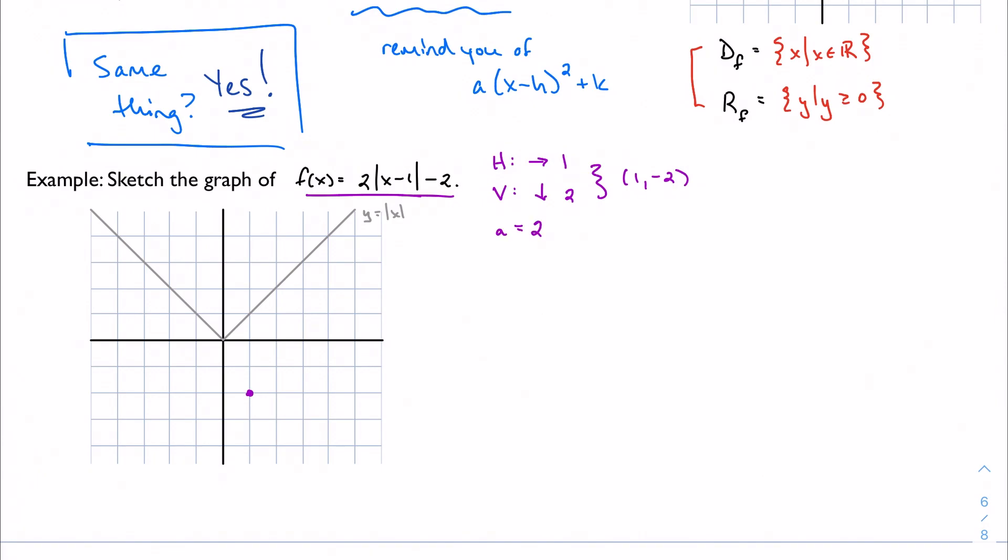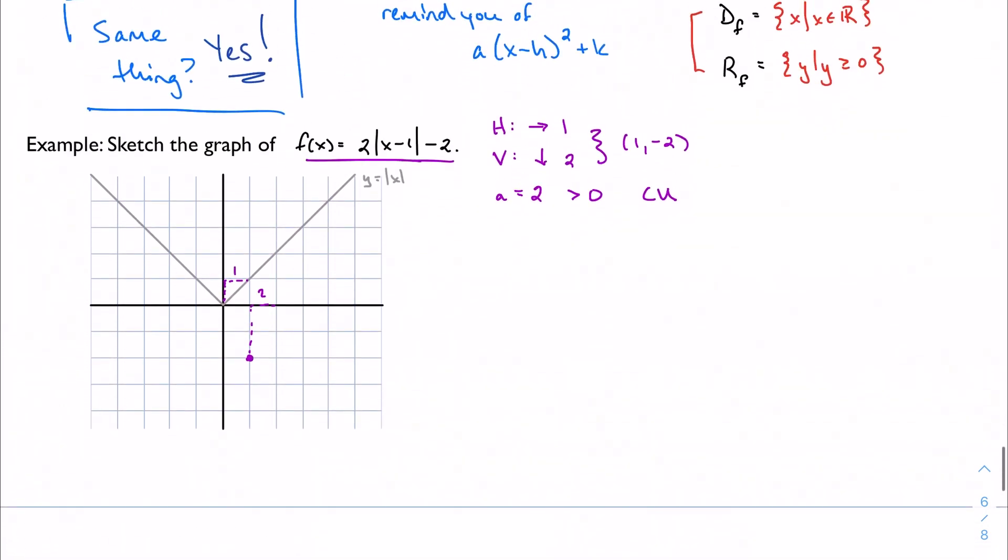My coefficient is 2, which is positive, so this is going to be concave up. And it's scaled by a factor of 2, which tells me each of these slope pieces, each of these lines, instead of having a slope of 1, is going to have a slope of 2. So I'm going to have this type of thing, and then this type of thing like that. So in purple is my function.